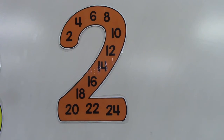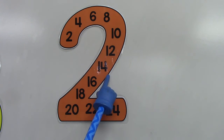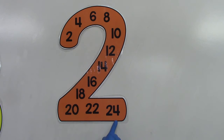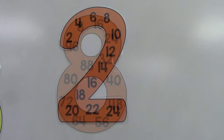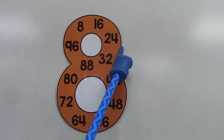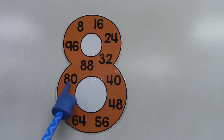Let's practice skip counting by twos: 2, 4, 6, 8, 10, 12, 14, 16, 18, 20, 22, 24. Now let's skip count by eights: 8, 16, 24, 32, 40, 48, 56, 64, 72, 80, 88, 96.